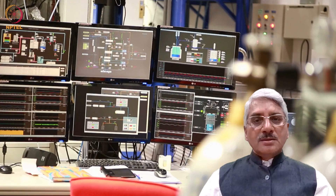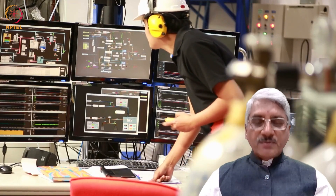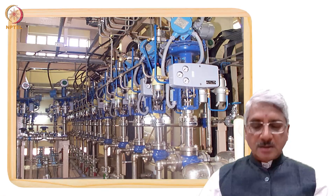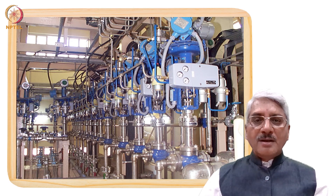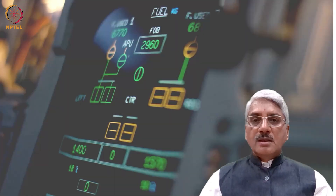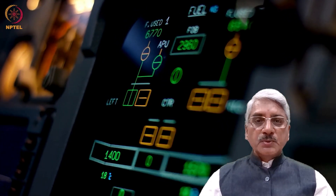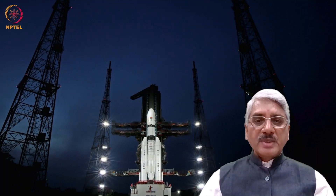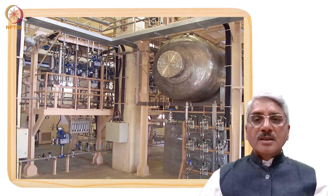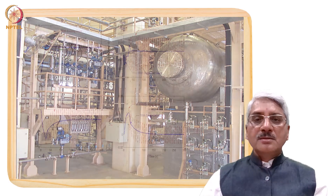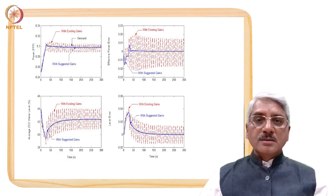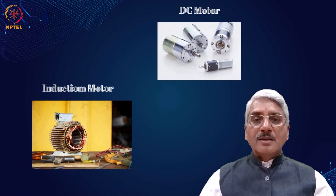If we look around us, we will find a number of control systems. For example, ideal speed control of an automobile, heading or direction control of a car, aircraft cruise control and attitude control, automatic instrumented landing system, boiler level control, boiler pressure control, load frequency control in a power plant, and antenna control in deep space exploration or guidance systems.